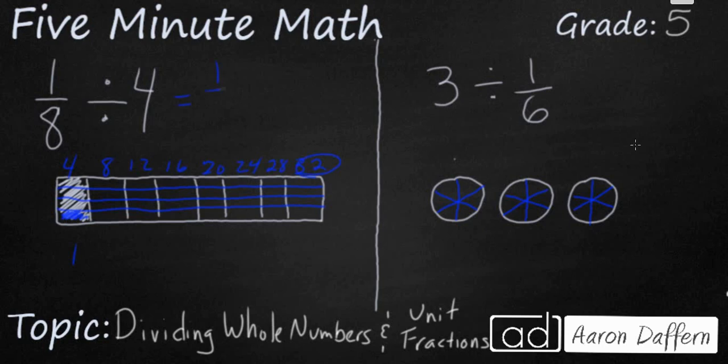So it's going to be one over thirty-two. Remember, you can also invert the operation and the divisor. So if I take my one-eighth and multiply it by one over four, you're going to get one thirty-second.